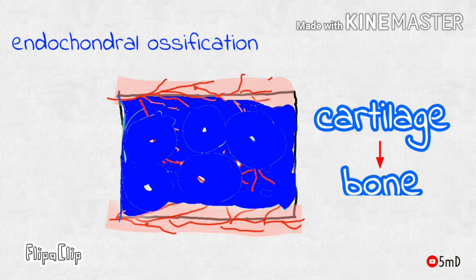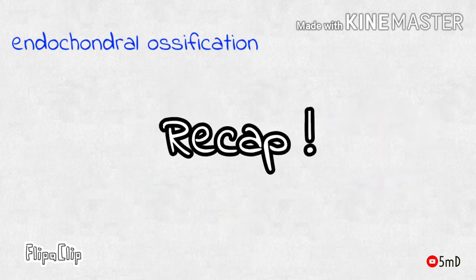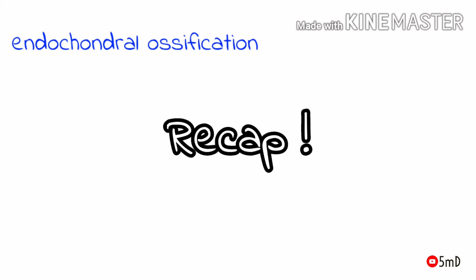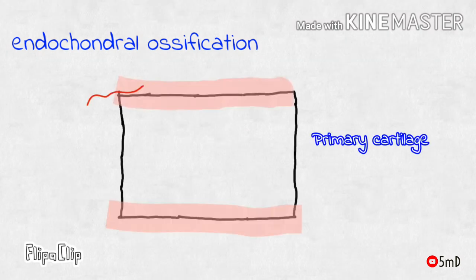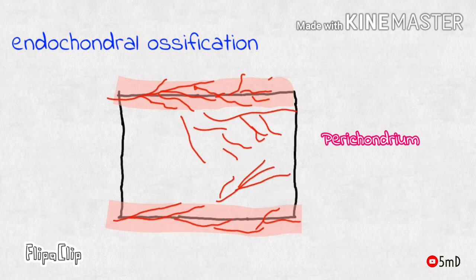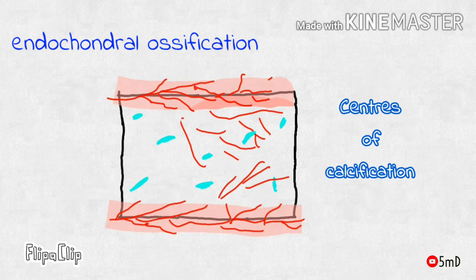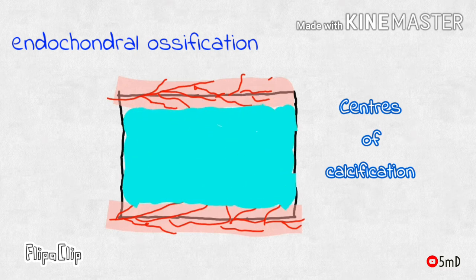Cartilage eventually turns to bone in endochondral ossification. To recap: during embryogenesis, primary cartilage is formed which acts as a template, on which perichondrium — highly vascular mesenchyme — forms and surrounds it. After which, centers of calcification appear within the primary cartilage, cutting off blood supply to the cartilage cells, resulting in the formation of empty spaces.